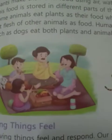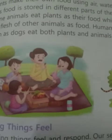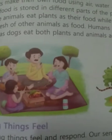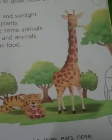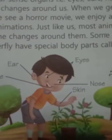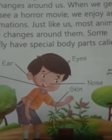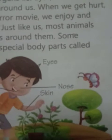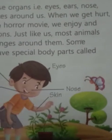Next, living things need food. All living things need food to live as well as to grow. Plants make their own food. Next, living things feel. All living things feel and respond. Plants also feel changes around them and we can see their response.